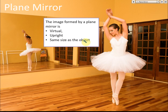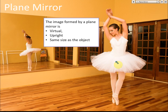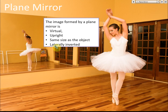The image formed by a plane mirror is the same size as the object. The image inside may look smaller, but that is only because it appears far away — not because the image is actually smaller. The actual size of the image equals the size of the object.